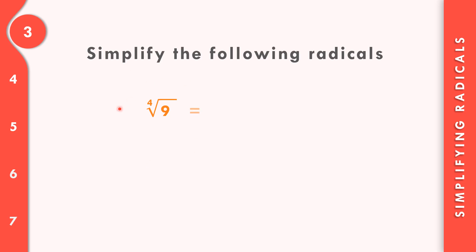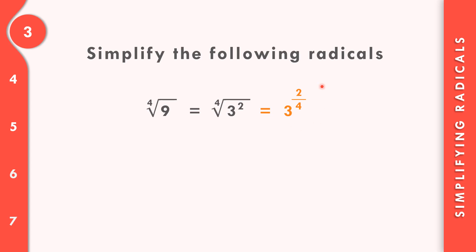For number 3, we have the 4th root of 9. We recognize that 9 equals 3 times 3, so the base is 3 and 9 equals 3 squared. We write the 4th root of 3 squared, then place the exponent 2 over the index 4. The lowest term of 2 over 4 is 1 over 2, since 2 divided by 2 is 1 and 4 divided by 2 is 2. Converting back to radical form, the final answer is the square root of 3.